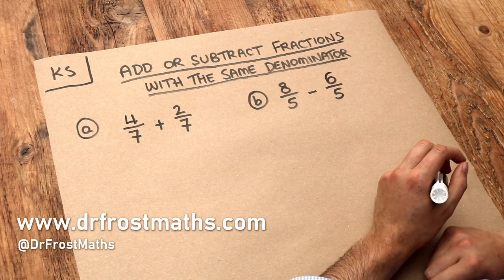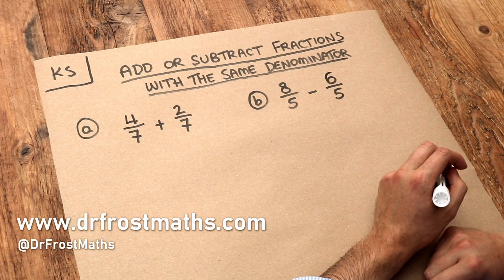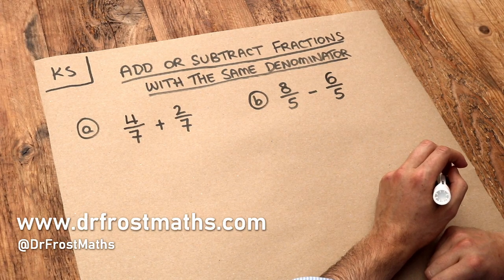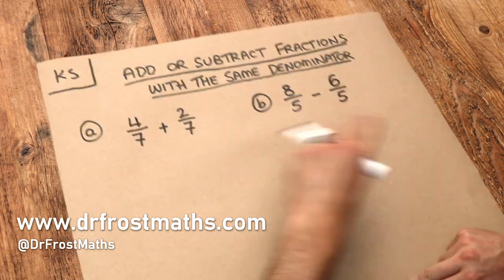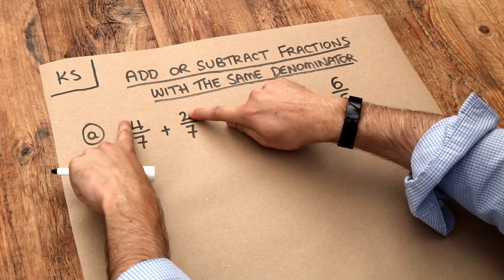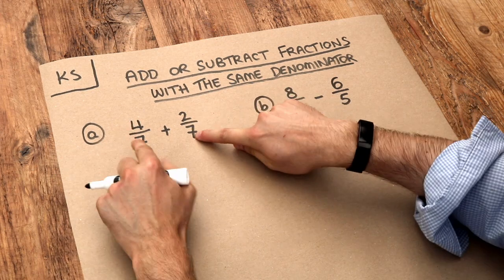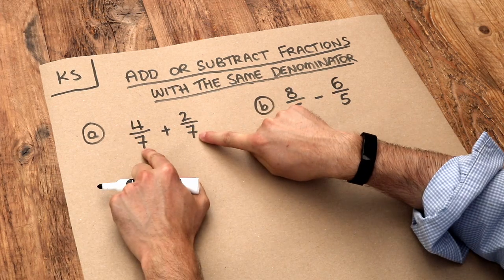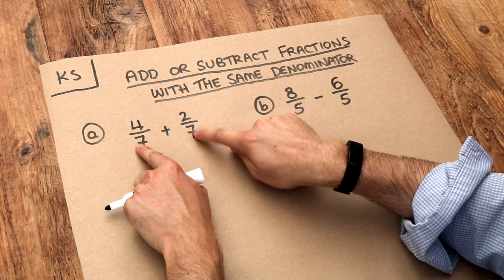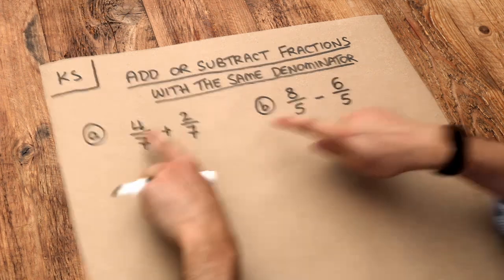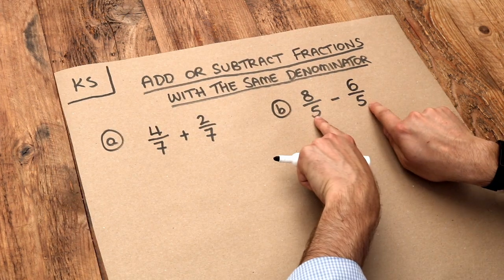Hello and welcome to this Dr Ross Maths key skill video on adding or subtracting fractions with the same denominator. Remember, the top numbers of a fraction are known as the numerators, the bottom numbers are known as the denominators, and as per the title we have the same denominators here.